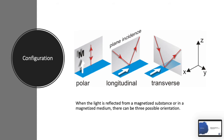The three orientations are polar, longitudinal, and transverse. In different orientations there are different phenomena. In the polar orientation, the magnetic field is perpendicular to the surface, which is why it is known as the Polar Kerr Effect.